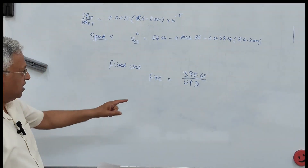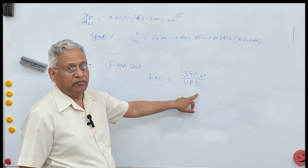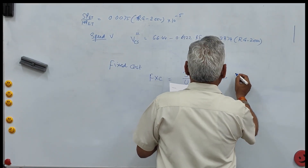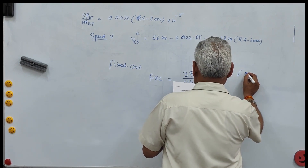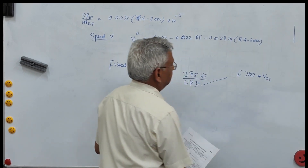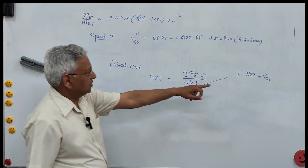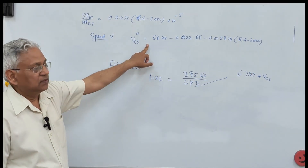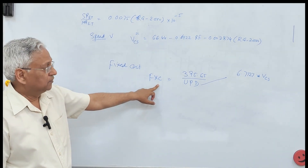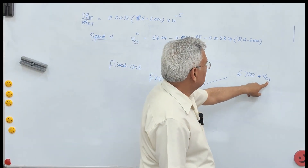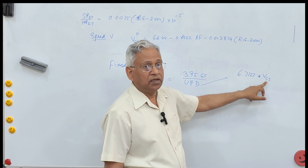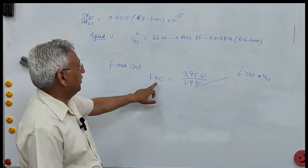UPD is given by 6.7127 multiplied by VCS, and VCS is given by an equation for a small car that depends upon the number of lanes. For a single lane road you take the equation corresponding to single lane, and for a four lane road you take the equation corresponding to four lane to calculate FXC.